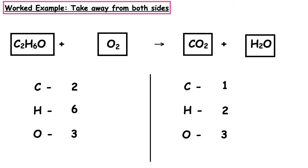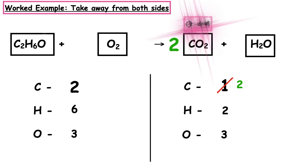Starting at the top of the shopping list: how many carbons on the left? Two. On the right? One. They don't balance. We multiply by two, putting a big 2 in front of the CO₂. One carbon inside the box times two equals two. How many oxygens inside the box? Two — times two is four. I'll put that above the CO₂. Carbons balance — tick them off.